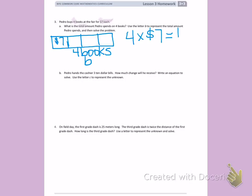which will equal B. Counting by 7s four times gives me B equals $28. Pedro spends $28.